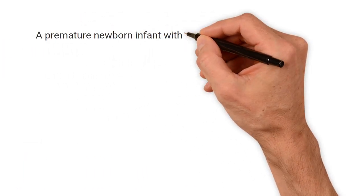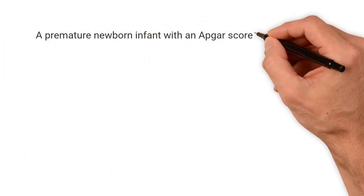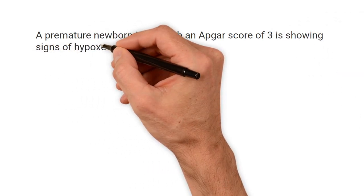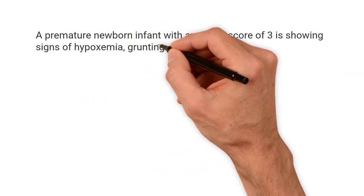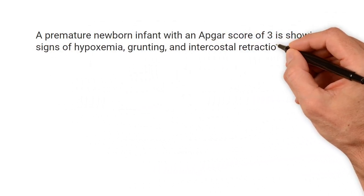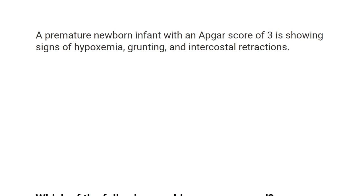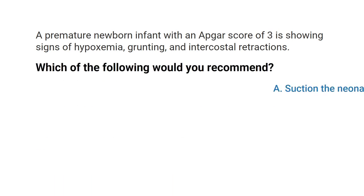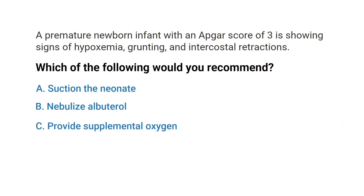A premature newborn infant with an Apgar score of 3 is showing signs of hypoxemia, grunting, and intercostal retractions. Which of the following would you recommend? A) Suction the neonate, B) Nebulize albuterol, C) Provide supplemental oxygen, or D) Instill surfactant into the airway?